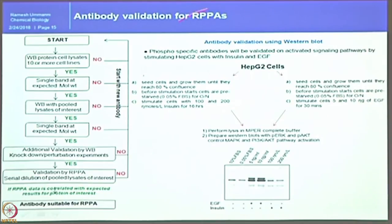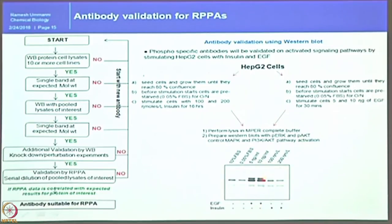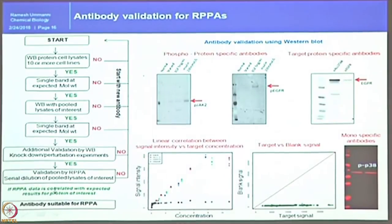The next round of validation uses western blot with a suitable cell line stimulated with factors that modulate your protein of interest, based on prior information. In one example, HepG2 cell lines were stimulated with EGF and insulin — these two factors stimulate phosphorylation of AKT and EGFR. EGF stimulated phosphorylation of EGFR while insulin did not, showing these phosphorylations are mutually exclusive. If the antibody passes this step, it moves to the next level of validation.